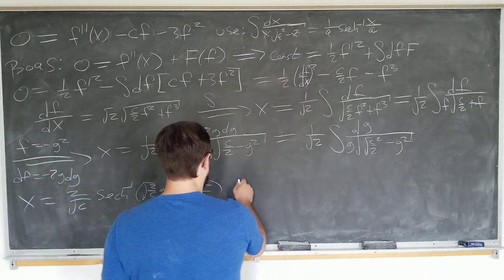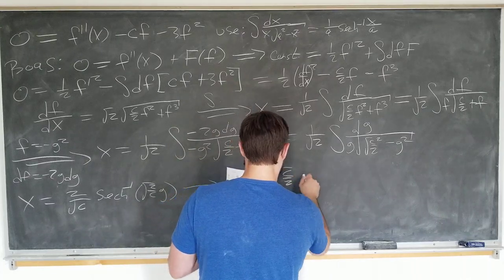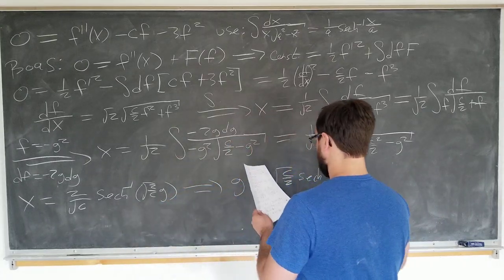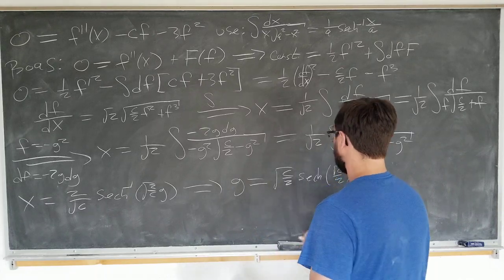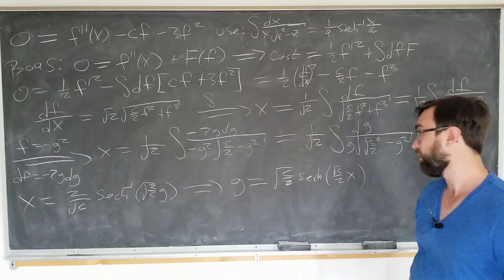So then g is now square root of c over 2 sech square root of c over 2 x. Good, we have g, but we don't really want g, we want f.